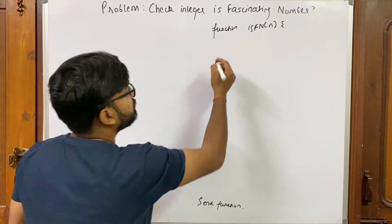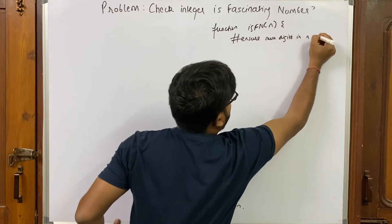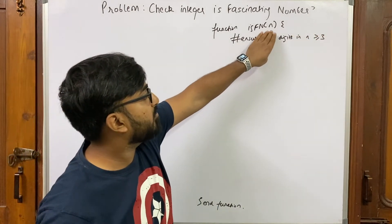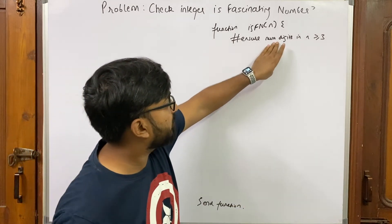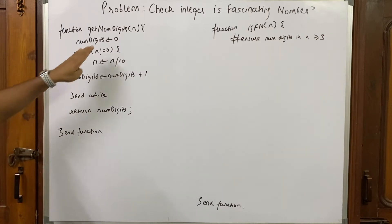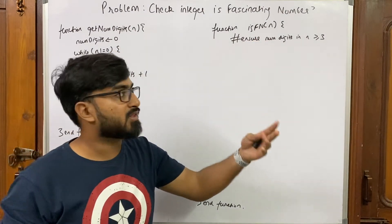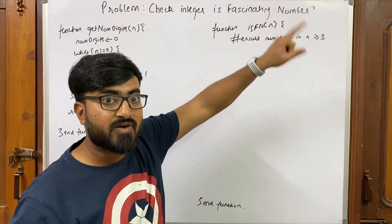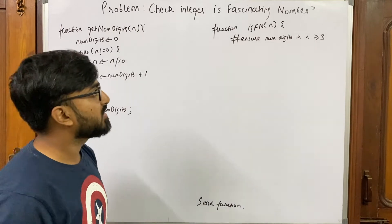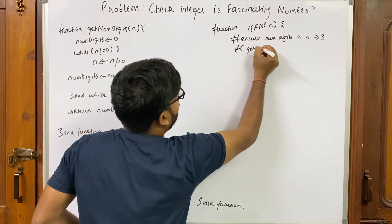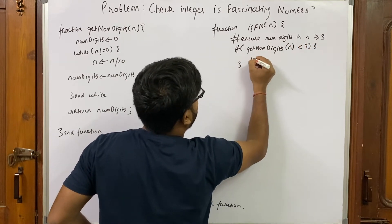Our first check is to ensure that this is at least three digits: ensure num_digits(n) is greater than or equal to three. I've already posted a video on finding the number of digits in an integer — you can check the link in the description. This approach works across all languages, including C, where converting an integer to a string is trickier. So: if getNumDigits(n) is less than three, return false.